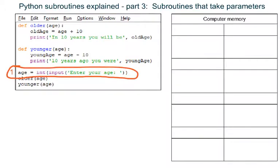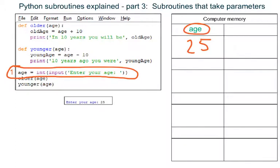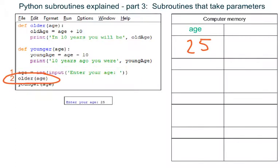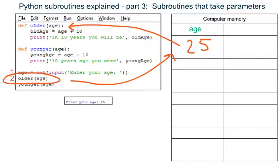A variable named age is made and an integer stored in it. I've labelled this variable name in green to make it stand out. The subroutine older is called and a copy of the data inside variable age is sent to the subroutine, so Python jumps back up the program taking a copy of the data in variable age with it.